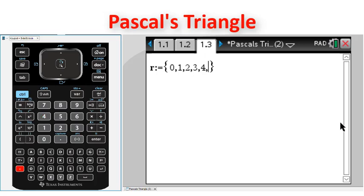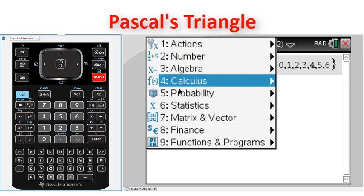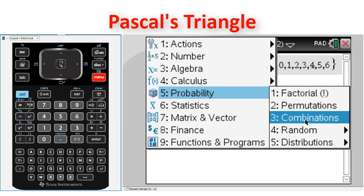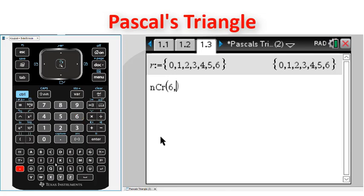I'll set r equal to the numbers from 0 through to 6. Then we can use the combinatorics command, ncr, as 6, r.